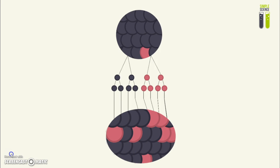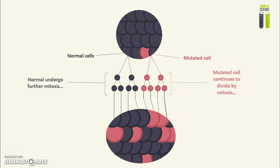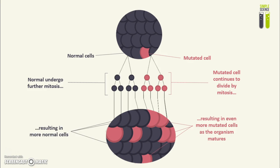Here is a more visual demonstration of somatic cell mosaicism and how it happens. First, you have a population of normal cells, and then there is a mutated cell arising by mitosis. The mutated cell will carry on to divide by mitosis, and so will the normal cells. As a result, there would be more mutated cells and more normal cells in the mature organism, so the final product would be a mosaic of normal and mutated cells.